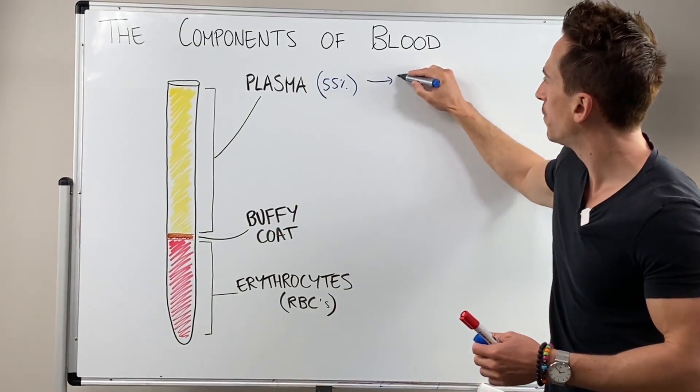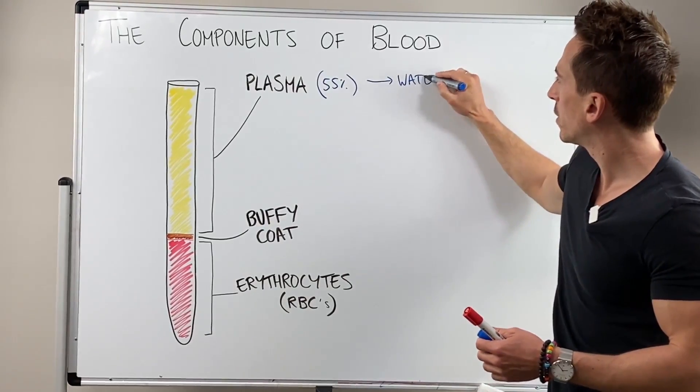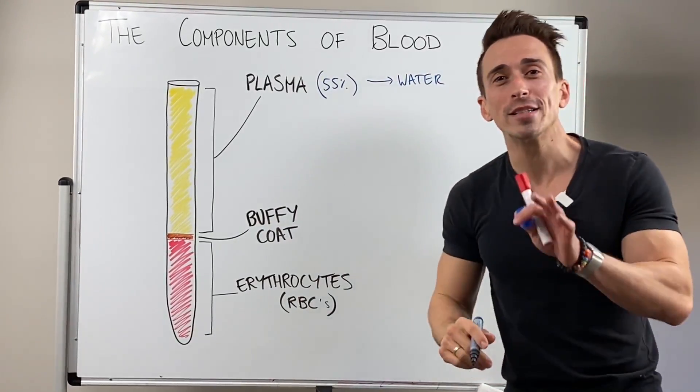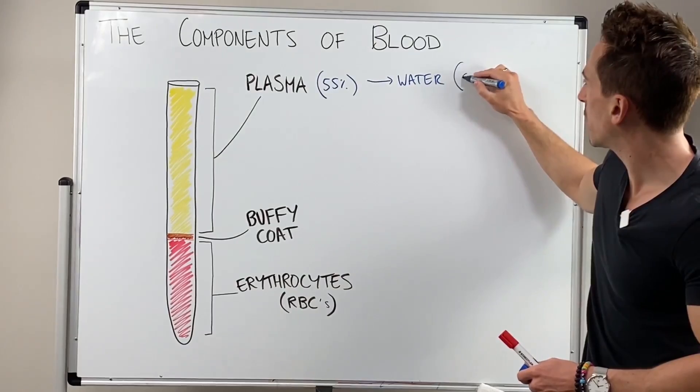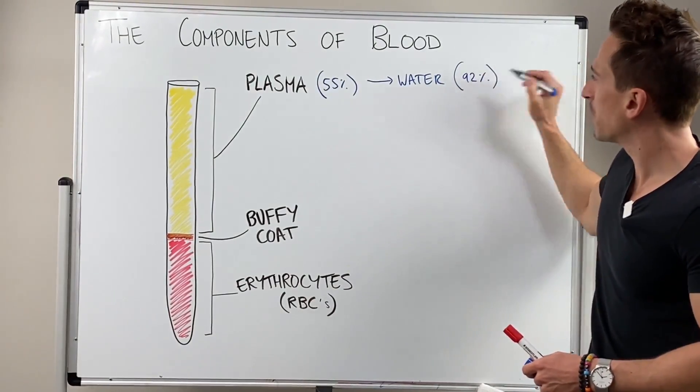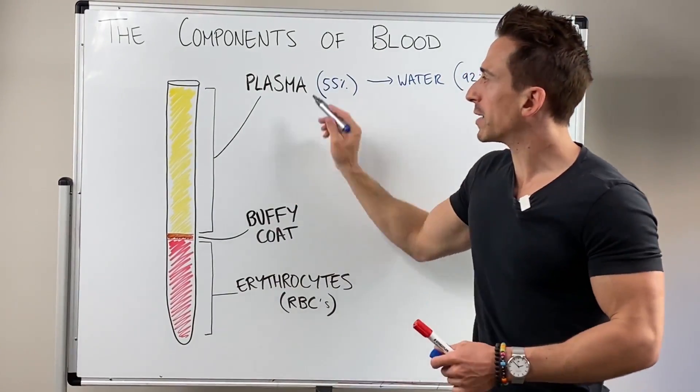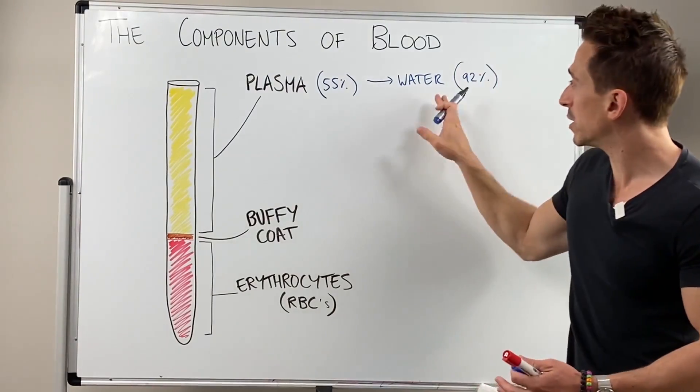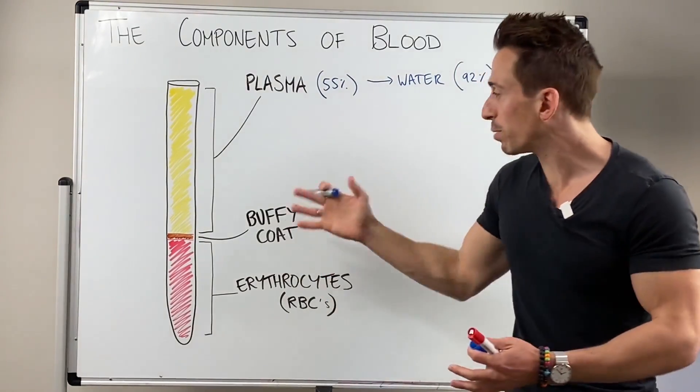These are water, which actually makes up around about 92% of your blood plasma. So what that means is if most of your blood is plasma and most of your plasma is water, therefore most of your blood is water.